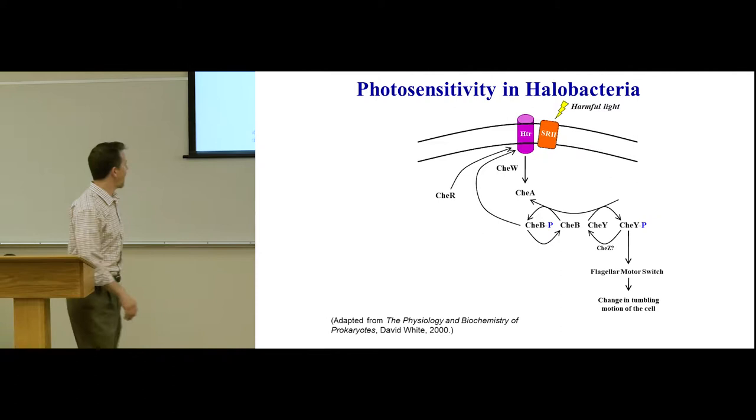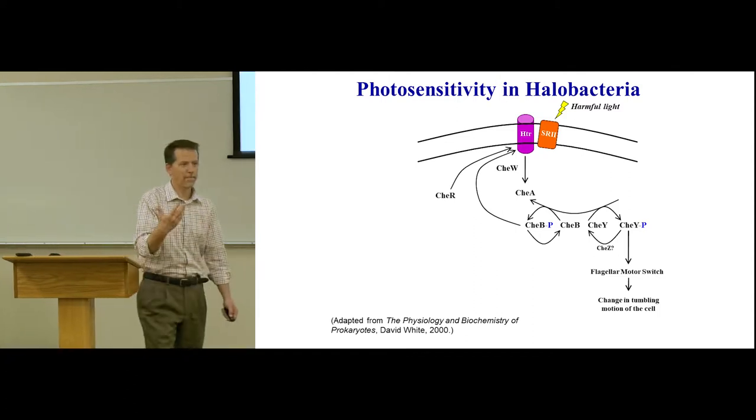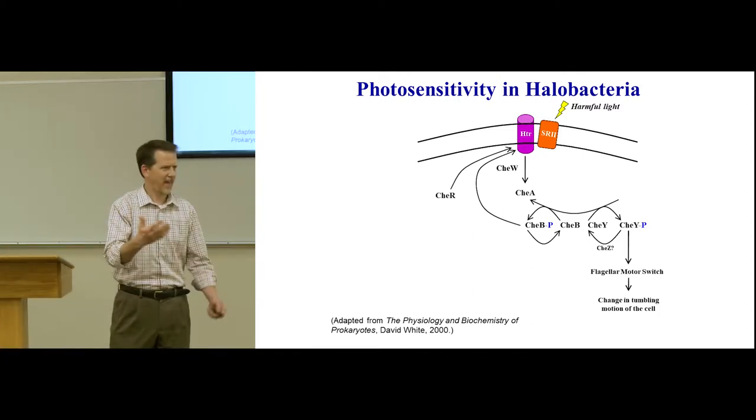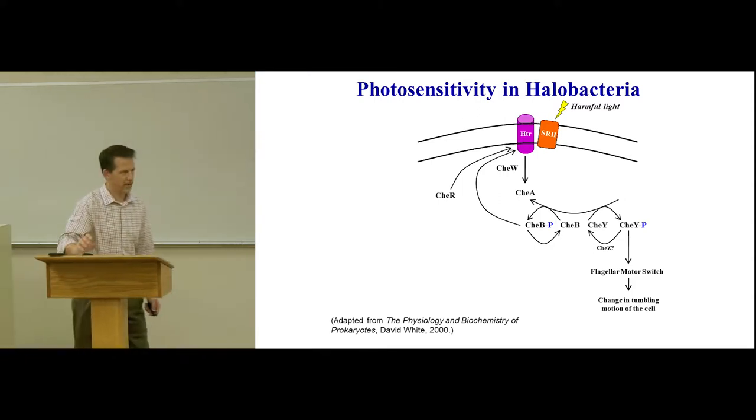And to do that, there's other proteins that help it adapt. Like this guy, CHEB, now with a phosphate on it, doesn't grab it off the CHEA, is going to go up here and talk to HTR. And HTR is activated or deactivated by another chemical called methyl. Have you ever heard of methyl? It's related to methane. You've heard of methane gas. Methyl groups are another very common signal. But sometimes CHEB-P needs to be balanced and slowed down. And so CHER also talks to HTR.